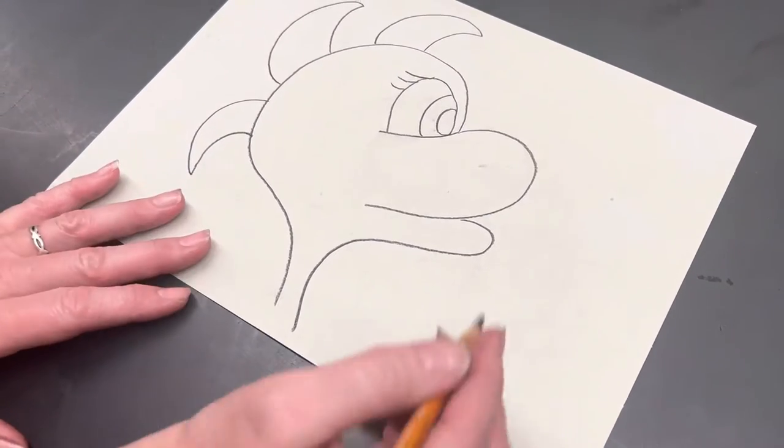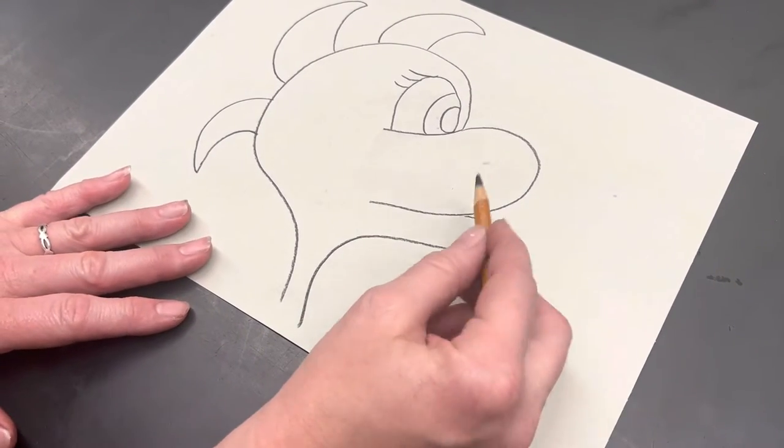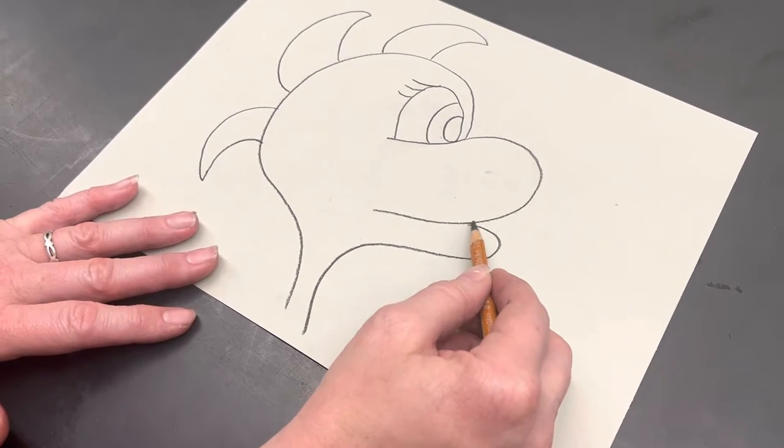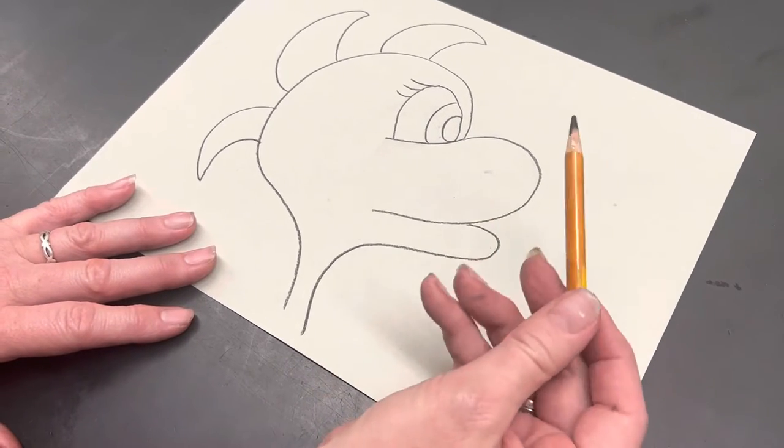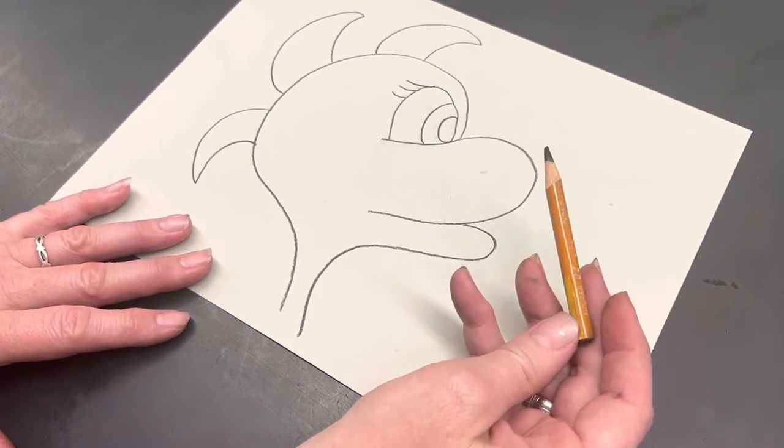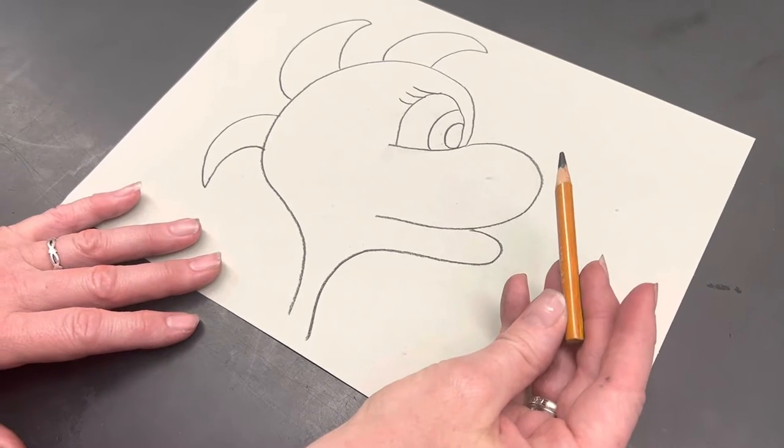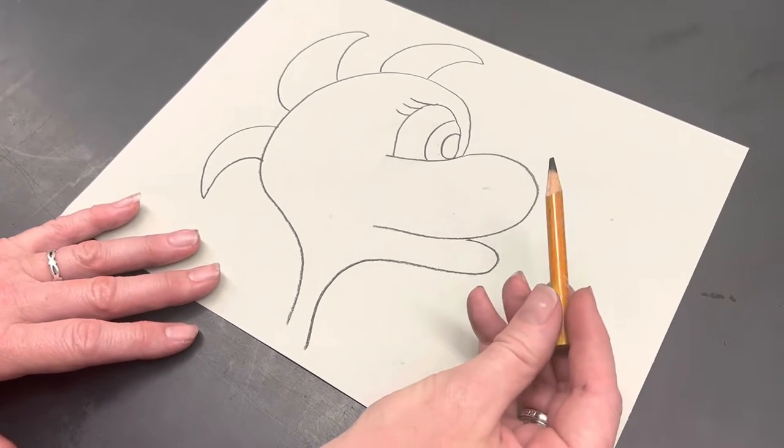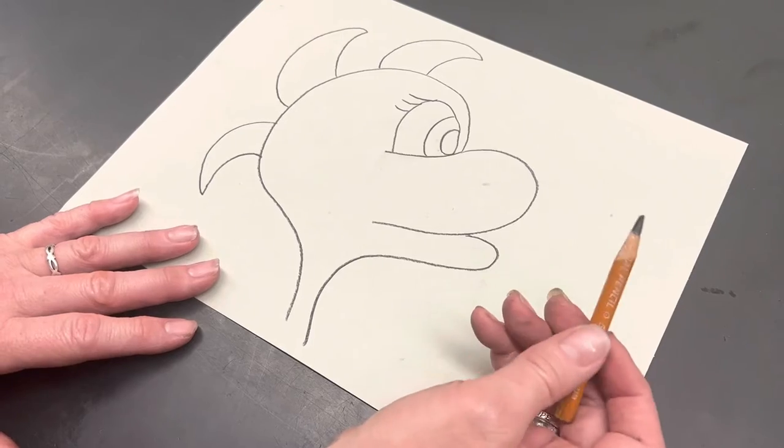Okay, so whenever you're ready to start using the charcoal, you're going to outline everything with a charcoal pencil. I would use a 2B. It's nice and soft, and it can be blended, but it will also give you a nice outline.